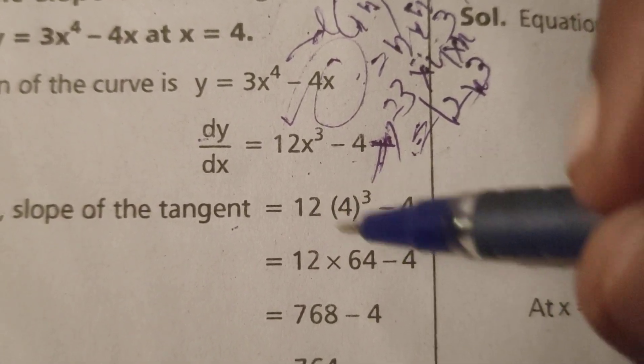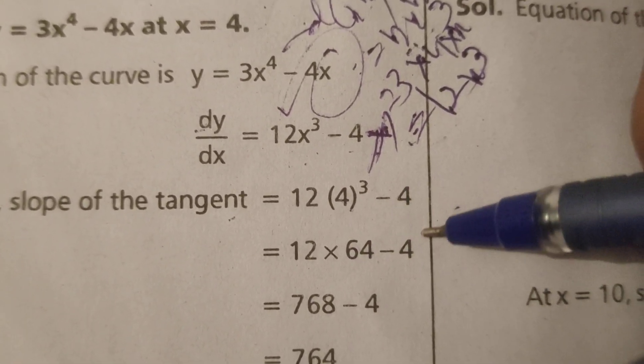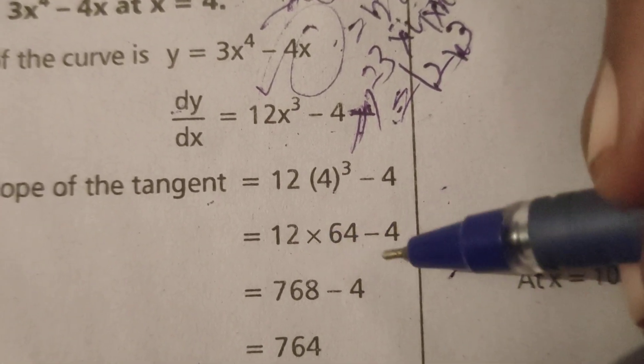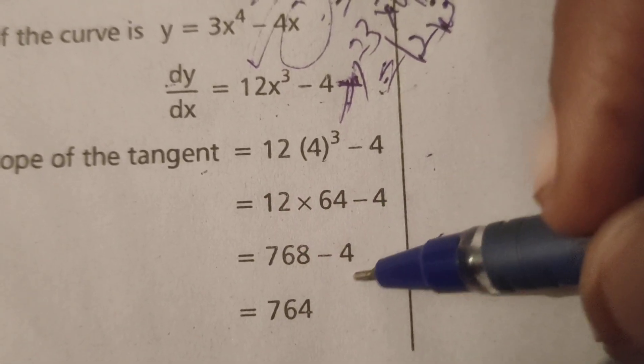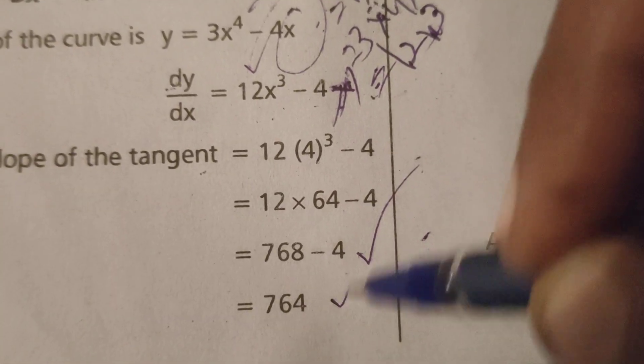Multiplying 4 three times gives us 64 minus 4. 64 times 12 is 768 minus 4, that is 764.